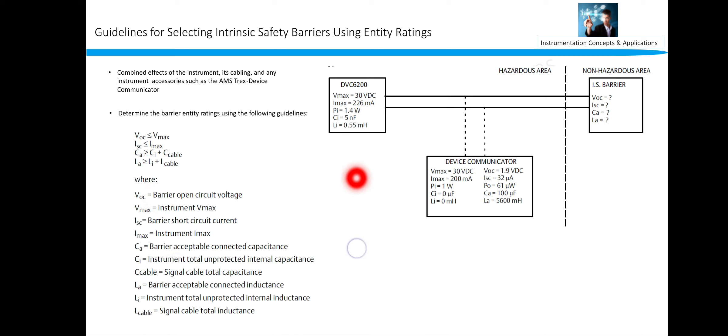So the VOC, or barrier open circuit voltage of barrier, should be less than Vmax. And I of short circuit current is less than Vmax. And the capacitance of barrier should be greater than Ci plus C cable, and inductance should be greater than Li plus L cable. Coming to the note, what is the VOC and Vmax? VOC is barrier open circuit voltage, that means over this voltage the barrier will get open and the functionality of this barrier will be no more. Vmax is the instrument.